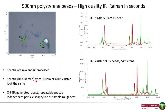In the context of microplastics, this is a really powerful example showing 500-nanometer polystyrene beads measured in seconds simultaneously in infrared and Raman — the OPTIR spectrum in red, the Raman in green. Whether it's a half-micron bead or a cluster of two-micron beads, the spectra look the same — there are no dispersive scattering artefacts. OPTIR generates repeatable spectra that are independent of particle shape and size or sample morphology.